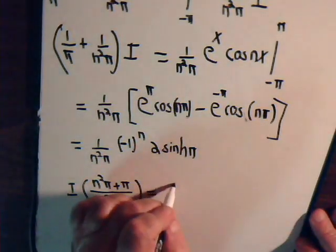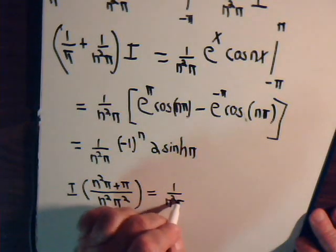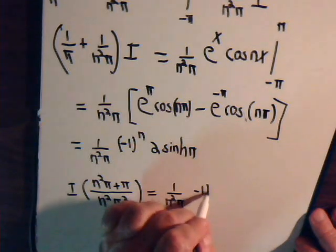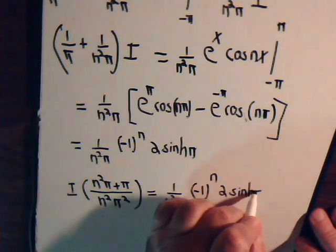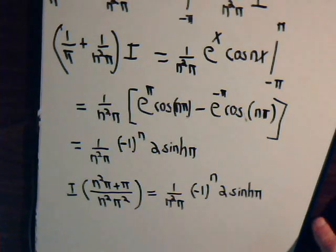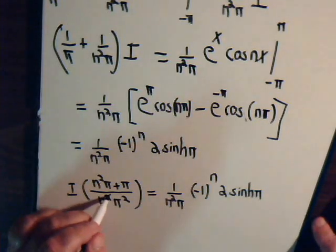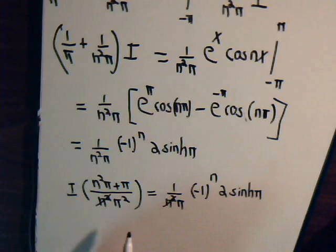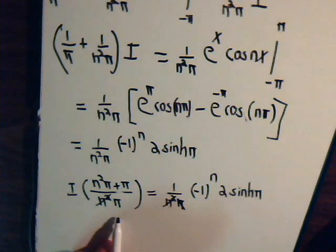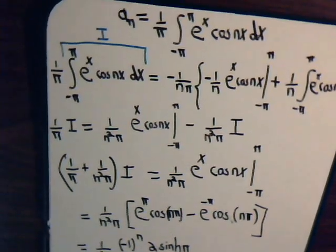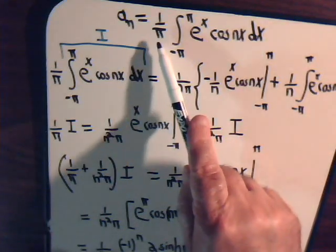On the left side of the equation, we have n squared pi plus pi, divided by n squared pi squared, equals one over n squared pi times minus one to the n times two times the hyperbolic sine of pi. We have n squared on both sides, so we can cancel that. Multiplying both sides by pi will cancel terms and leave a pi in the denominator, which is exactly what we want — we want to know what I divided by pi is.